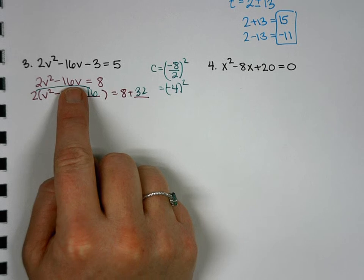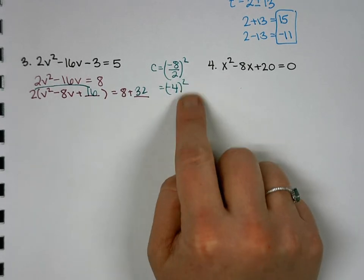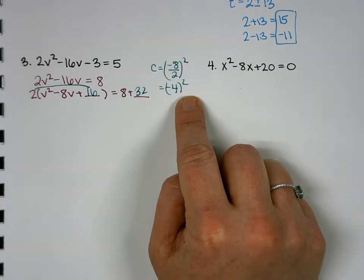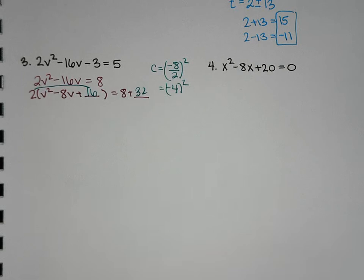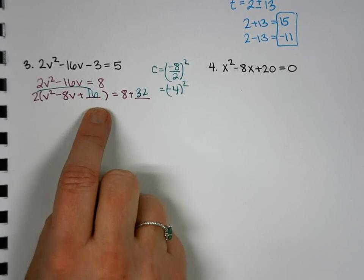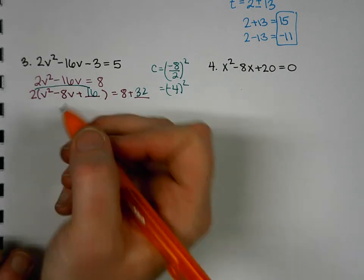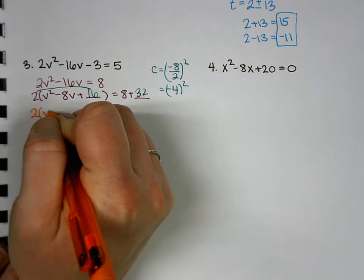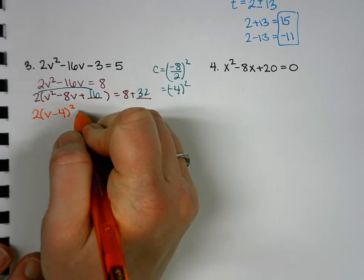So I factored out a 2. So what's 16 divided by 2? 8. The 16 is our C. Do you follow why we have to add 32 together? Because we're keeping our equation balanced. So because this 16 is inside parentheses, where a 2 is being distributed, if we were to distribute it, what number would that actually be? 32. So to keep our equation balanced, we've got to do a 32 on the other side. So next up, we're going to factor. So how is this going to factor? V minus 4 squared. And then this will equal 40.